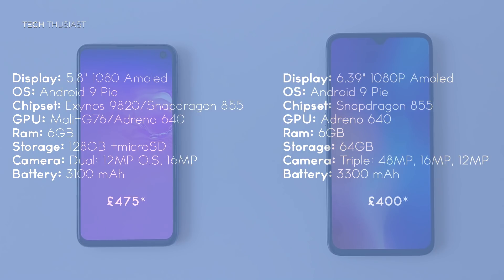For video recording, both phones were very good in 1080p. As for 4K, the Mi 9 seemed to have better video stabilization. I preferred the audio quality from the Galaxy S10e, as it was clearer and louder. For slow motion videos, both phones can record up to 960 frames per second at 720p, but I would say the Mi 9 had slightly better video quality.